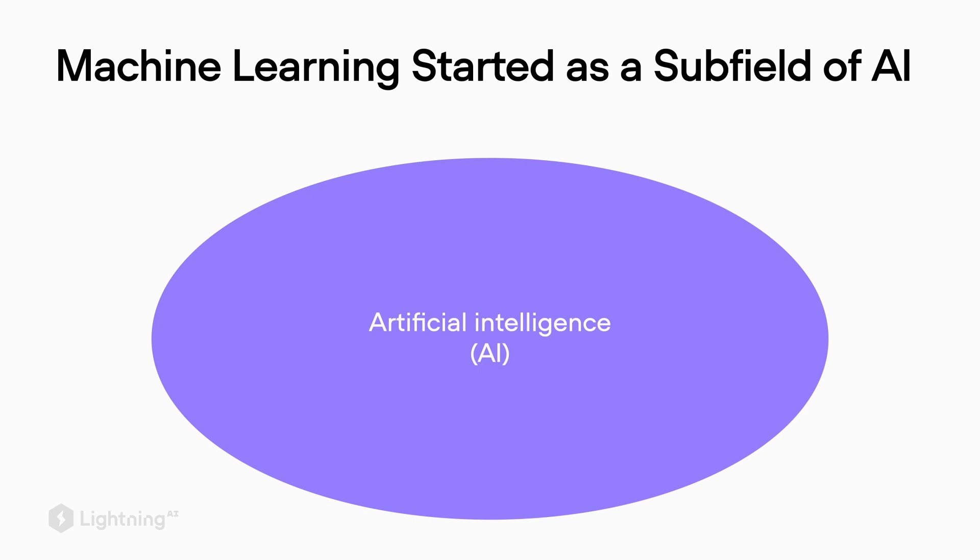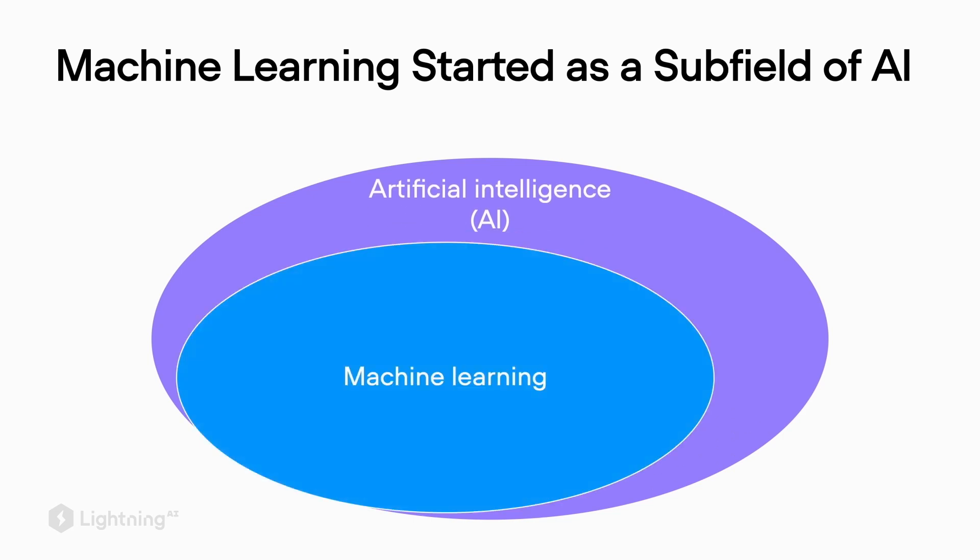There's another term you might have heard of: artificial intelligence, or AI. So how is AI related to machine learning and deep learning? Historically, everything started with this big field of AI, a subfield of computer science, where researchers try to make computers smarter — developing smart robots and computers for complex problem solving. Machine learning was then born as a subfield of AI to give computers the ability to learn from data.